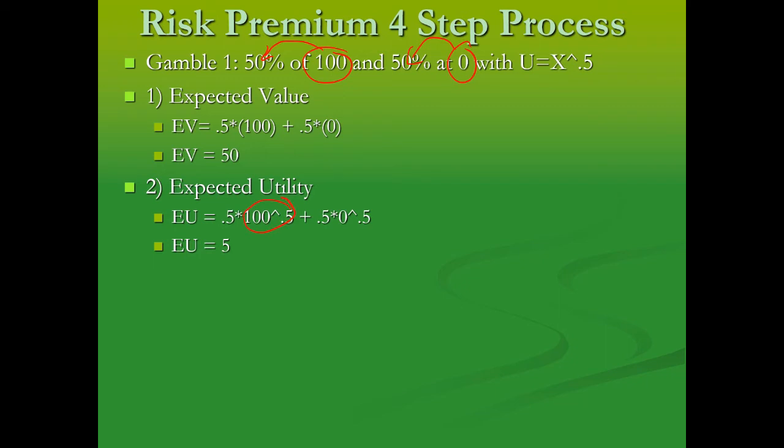We plug 100 into the utility function, 0 into the utility function, and then multiply by those probabilities. The expected utility in this case is 5.